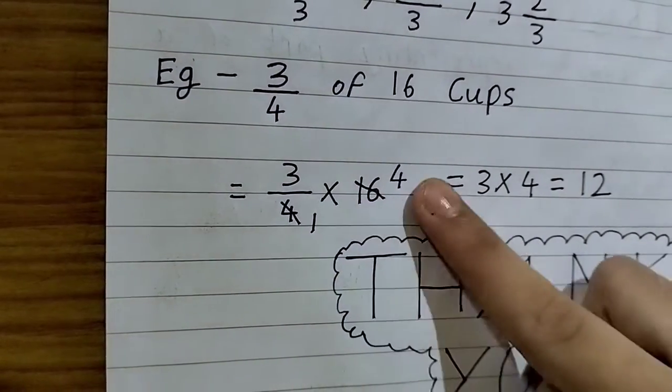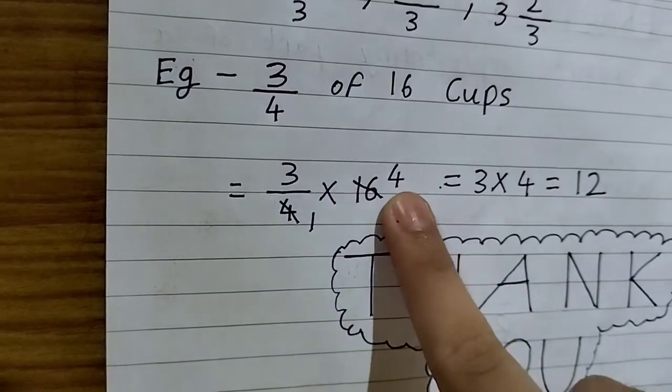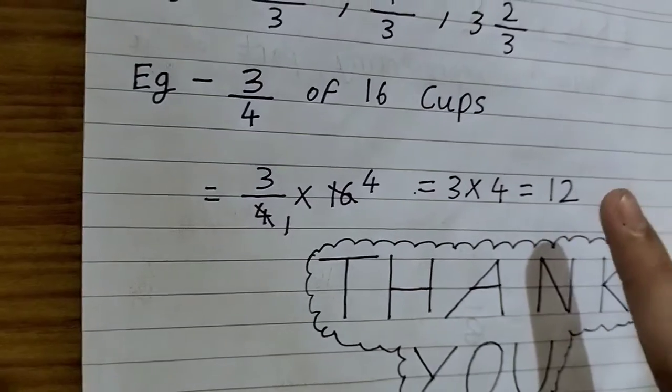4 ones are 4 and 4 fours are 16. Here we are left with 3 and 4. We will multiply 3 and 4 which equals 12.